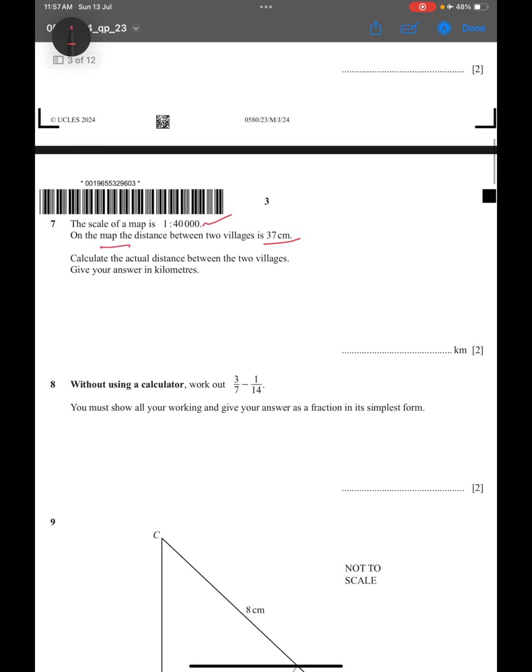On the map, the distance is 37 centimeters. Now, using the scale 1 to 40,000, you will do 37 times 40,000.